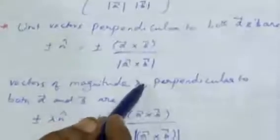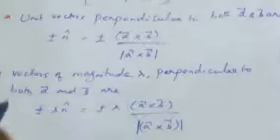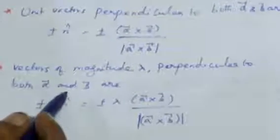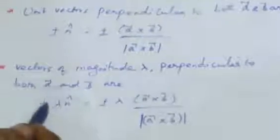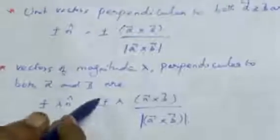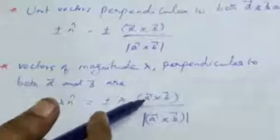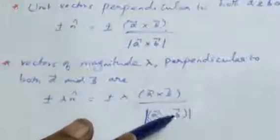Vectors of magnitude lambda perpendicular to both A vector and B vector are equal to plus or minus lambda into N cap, which equals plus or minus lambda into A cross B divided by modulus of A cross B.